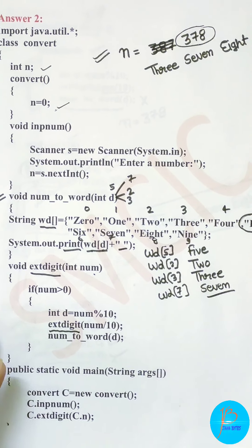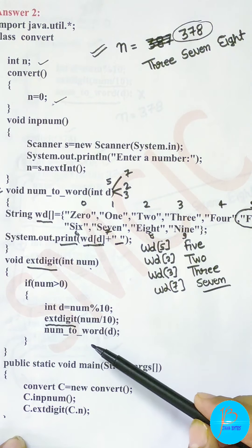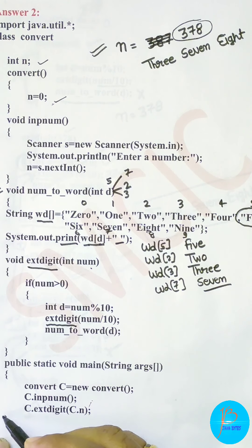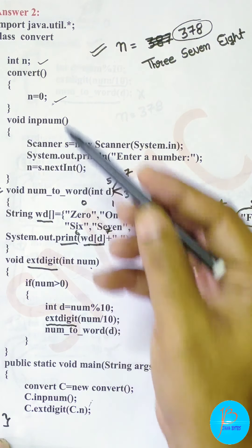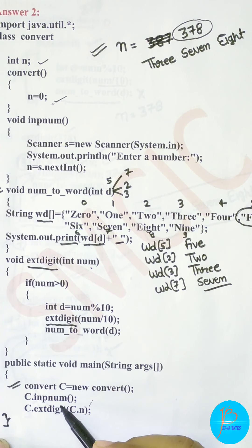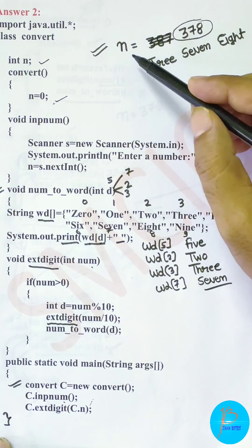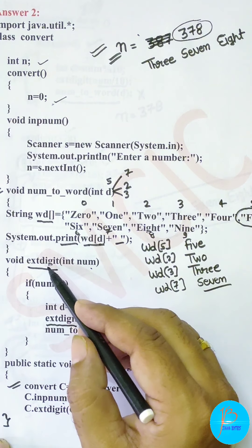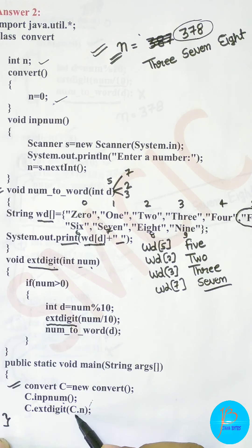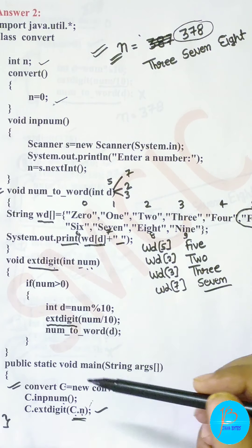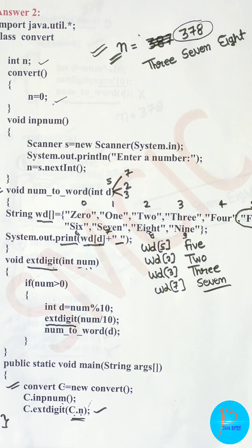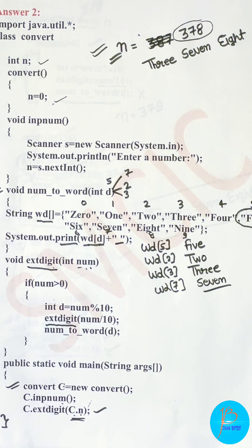I hope you now understand how numbers are printed in words using this recursive technique. Coming back to the main solution - after writing the whole program, you need to write the main method. Create an object: Convert c = new Convert(); then c.inputNum() to input the value of n; then call the recursive function c.extDigit(c.n) - passing the value of n from the object - and all digits will get printed as words on screen. This was the second answer, which has also appeared in board exams. Thank you, next we'll solve the third problem.